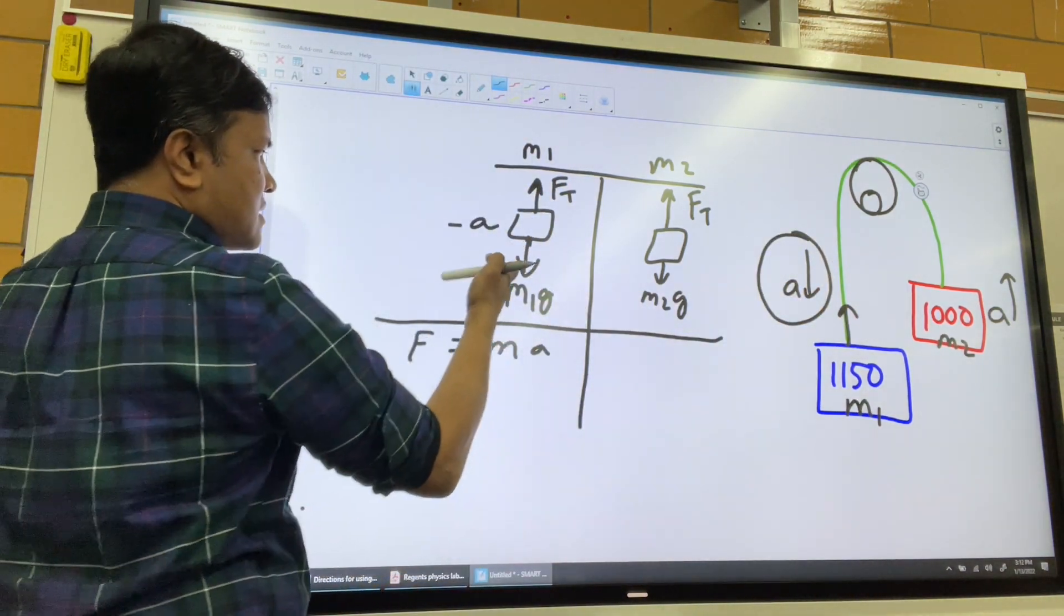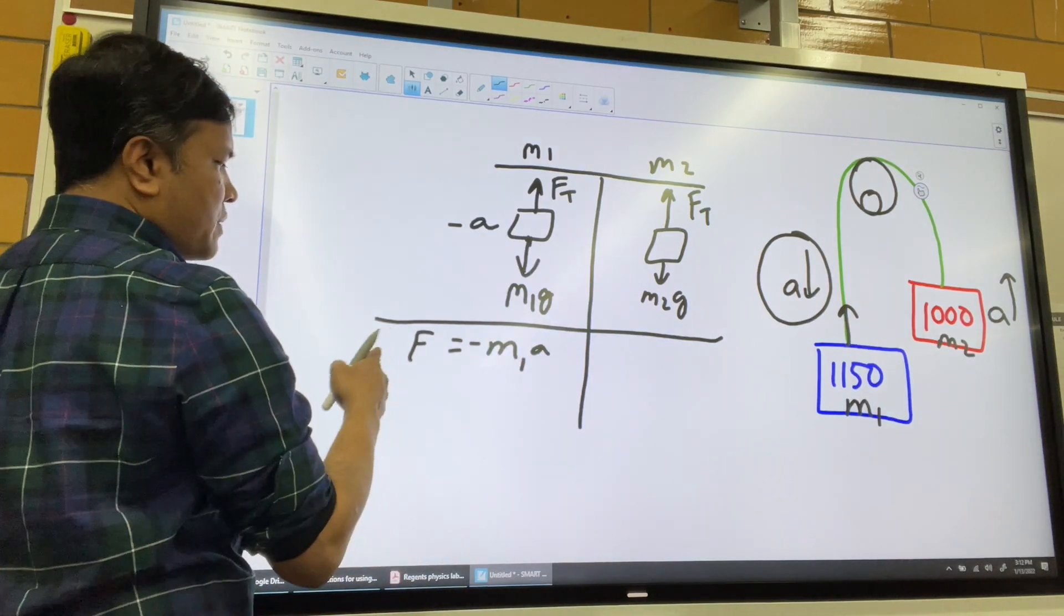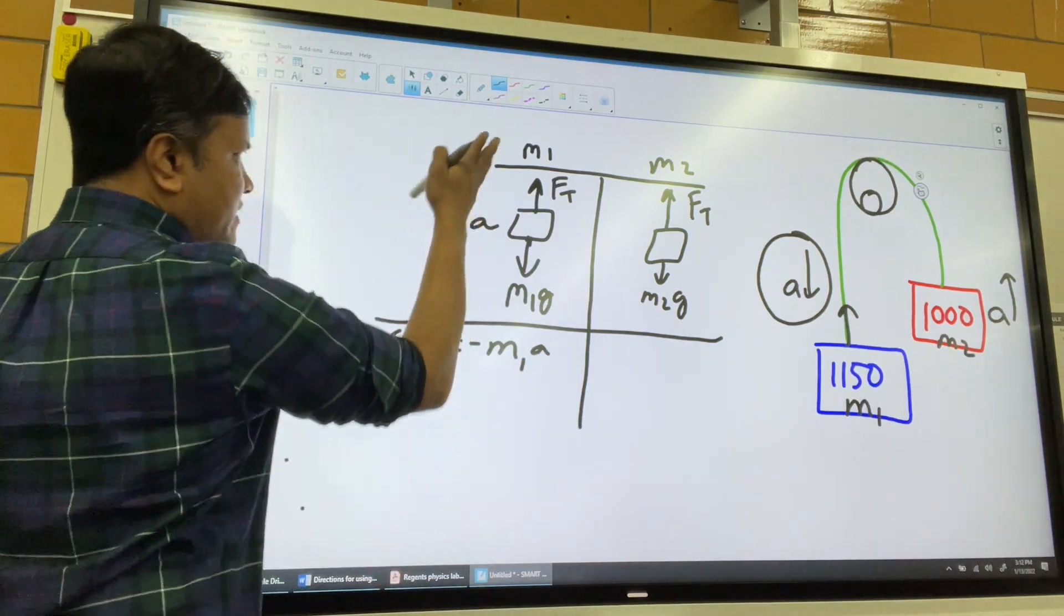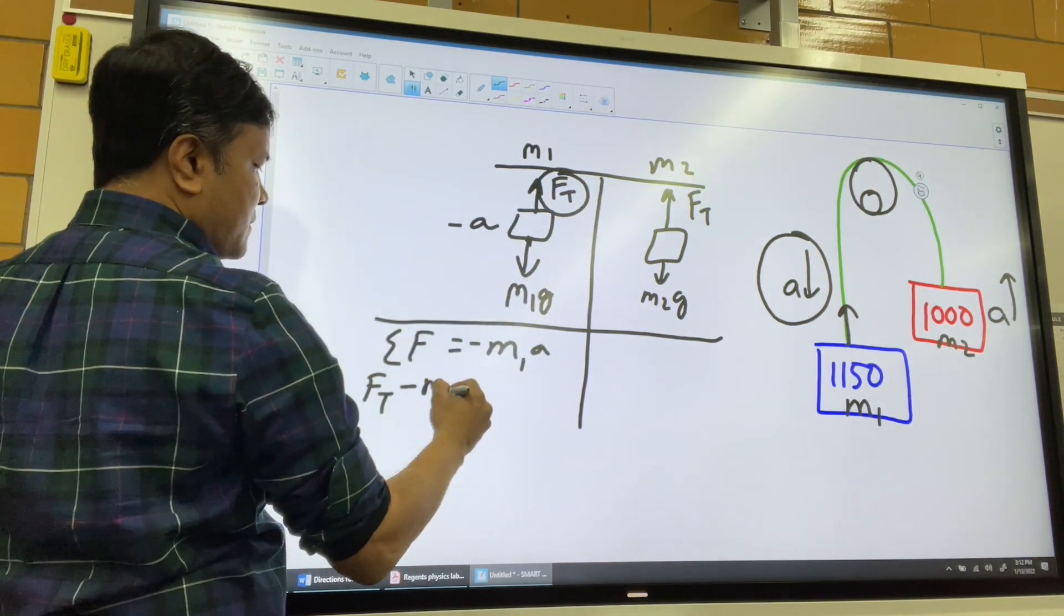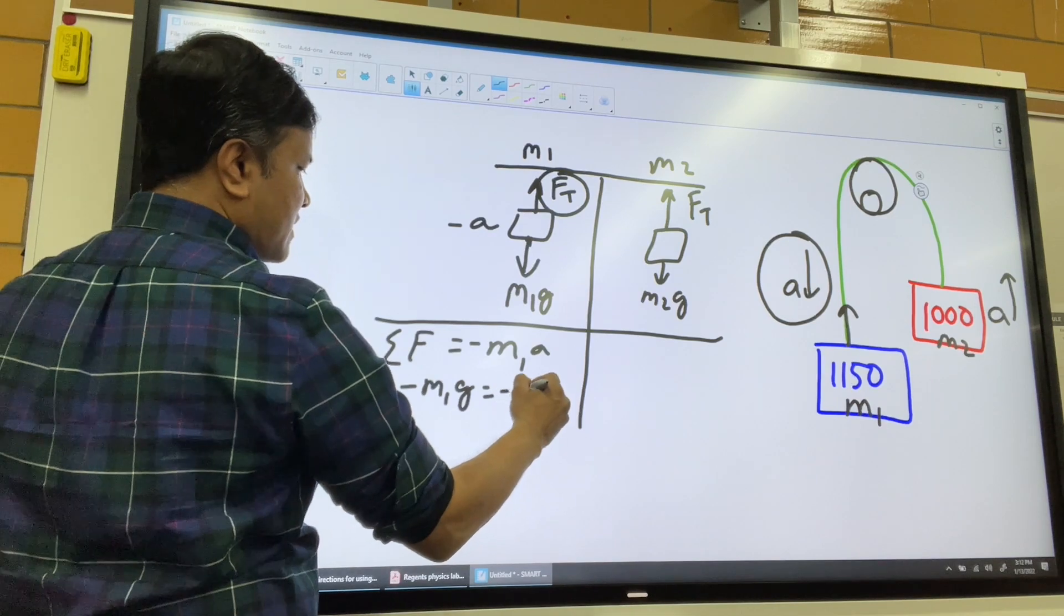So how many forces acting on that in the Y direction? Two forces. FT minus M1G is equal to negative M1A.